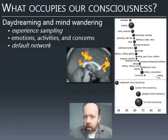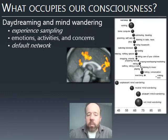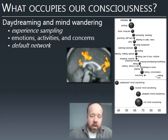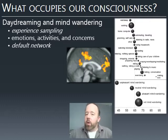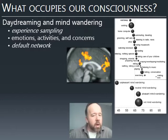When it comes to mind wandering, we can look at brain activity and see activity in regions called the default network. These are the regions active by default when you're not engaged in some task. As soon as you become engaged in a task, the relevant parts of the brain become active. But when you're just lying there mind wandering, areas in the frontal and parietal lobes near the midline of the brain become active. These are what's known as the default network.